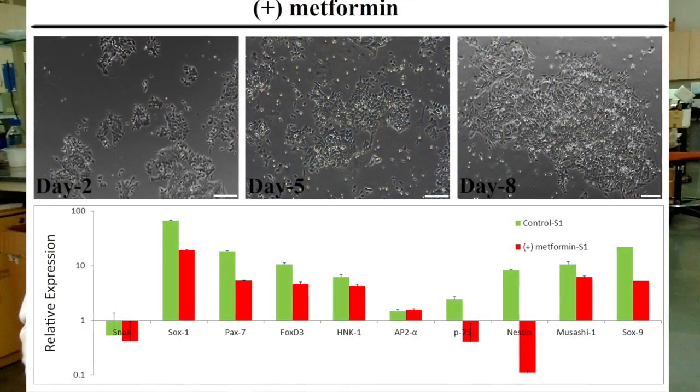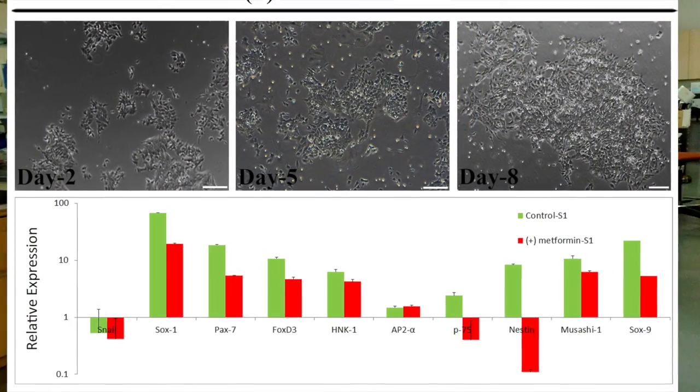In order to understand the molecular network underlying metformin action during neural crest formation, we first differentiated murine embryonic stem cells into neural crest cells and demonstrated the spatiotemporal regulation of key markers like SOX1, SOX9, HNK1, and P75. We further authenticated the multilineage differentiation potential of these naive neural crest cells by guiding them to form Schwann cells, smooth muscle cells, polycytes, and adipocytes. When we initiated treatment with metformin along the entire course of differentiation, we witnessed a delay in delamination and migration of these neural crest cells.